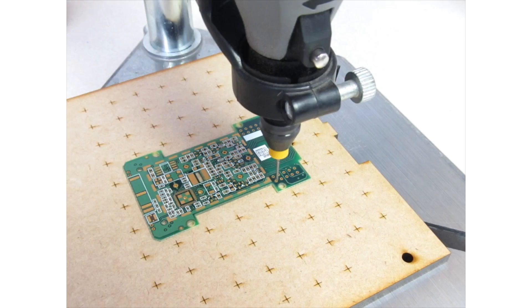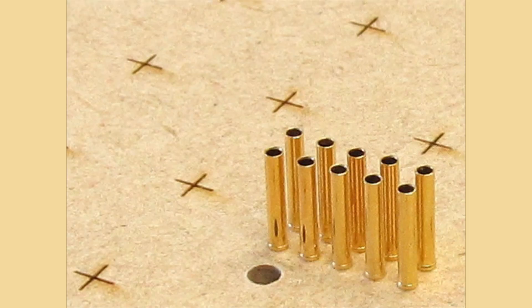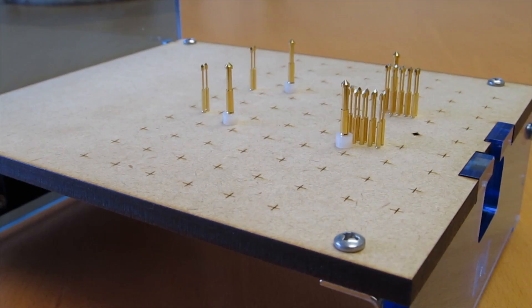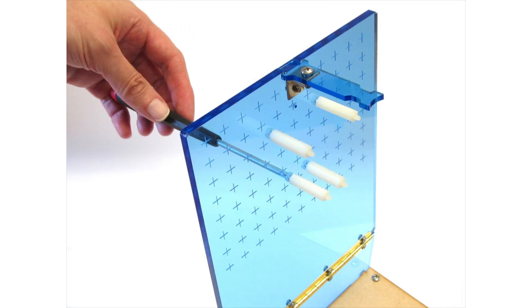You're going to customize the fixture to suit the board you want to test by drilling the probe plate and fitting test probes. You're also going to drill the pressure plate and fit hold down posts.